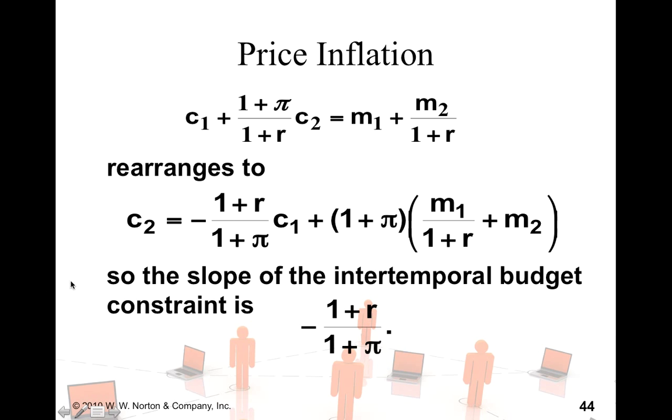So, once I solve this for c2, now the slope is going to be 1 plus r divided by 1 plus pi. So, now you can see that for a given interest rate, if inflation is higher, then the slope declines. If inflation is lower, then the slope increases. So, now the budget constraint, the intertemporal budget constraint, moves because of two factors. One is the rate of interest and second is the inflation rate.